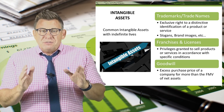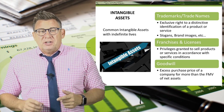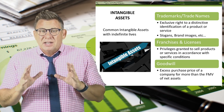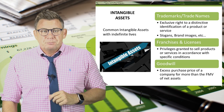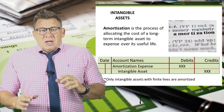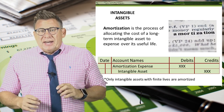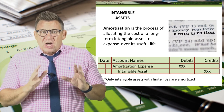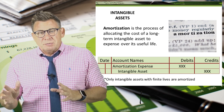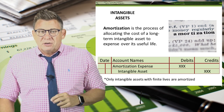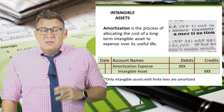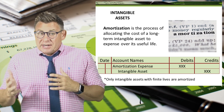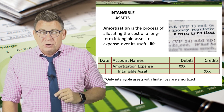This video will focus on the accounting for intangible assets with finite lives. Intangible assets with finite lives must have their costs allocated to expense over their useful lives. This process is known as amortization, and it is similar to depreciation.